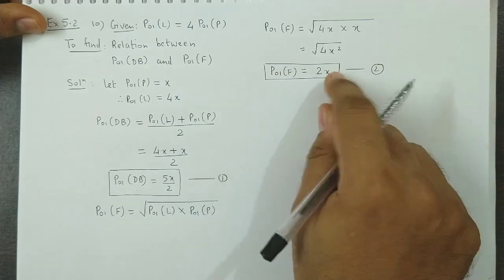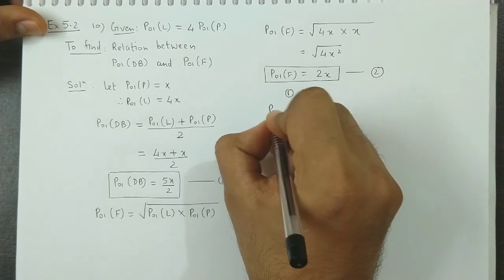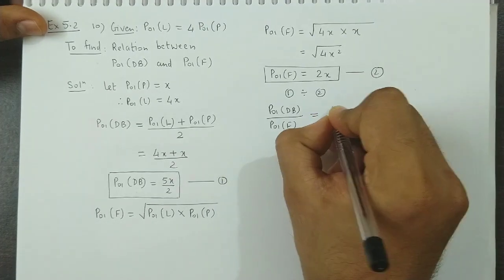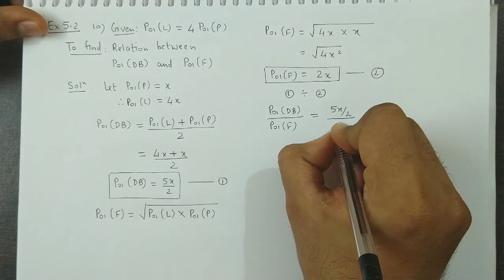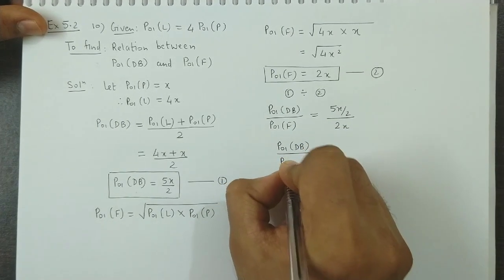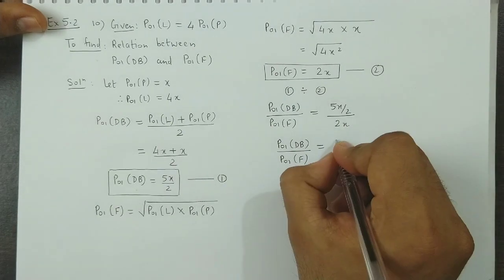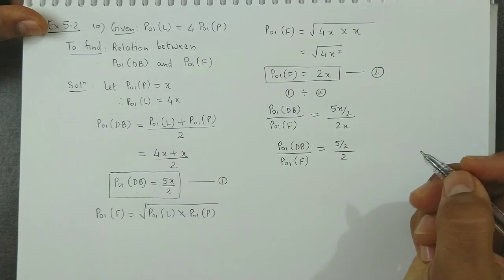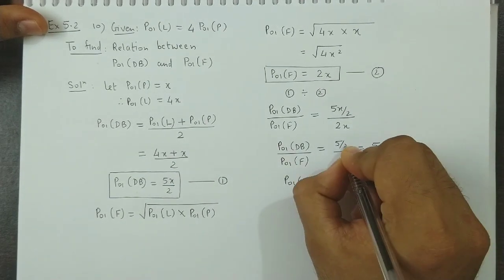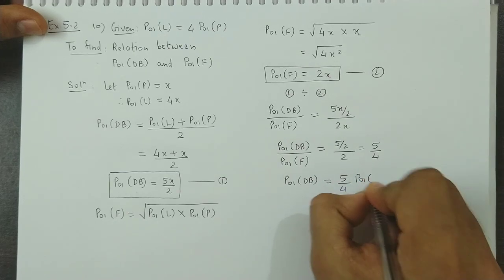Now, if we divide both equations, x will cancel out. Equation 1 divided by Equation 2 gives us Dorbisch-Bowley's index divided by Fisher's index. The right side is (5x/2) divided by 2x. The x terms cancel, giving us 5/2 divided by 2, which equals 5/4. So Dorbisch-Bowley's index upon Fisher's index is 5/4.